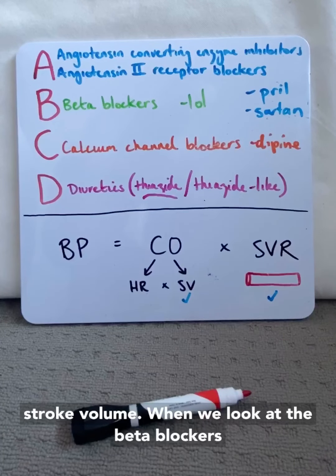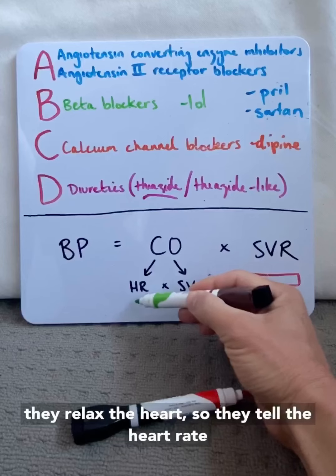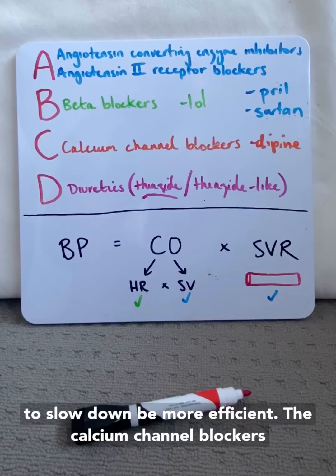When we look at the beta blockers, they relax the heart. So they tell the heart rate to slow down, be more efficient.